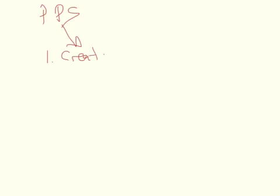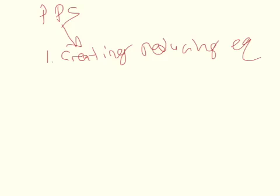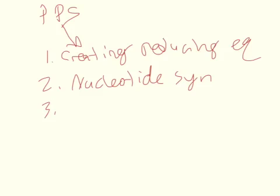In summary, the pentose phosphate shunt is used primarily for creating reducing equivalents and also for nucleotide synthesis, as well as several other things such as cholesterol synthesis and steroid synthesis further down the road. It can also be reverted back into downstream glycolysis substrates, so we can put it back into glycolysis.